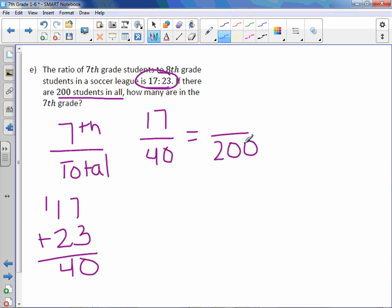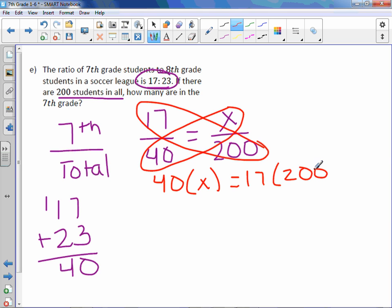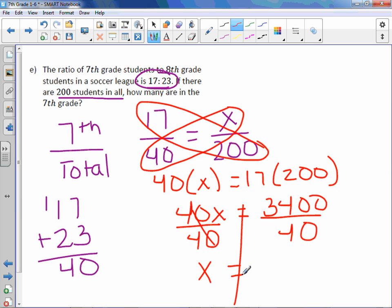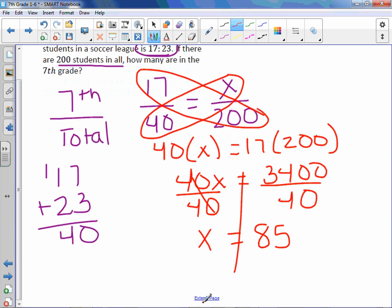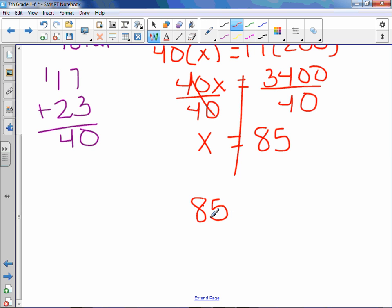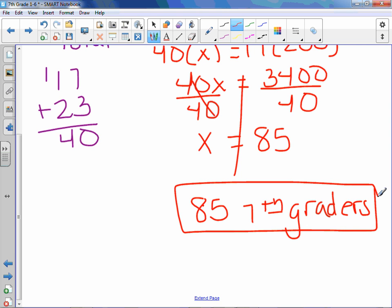We want to find how many 7th graders are in 200 students. So 200 would also be a total, which leaves our unknown up in the numerator. Cross multiply. 40 times X equals 17 times 200. 40 times X is 40X. 17 times 200 is 3,400. Divide by 40. X equals 85. So our answer is 85 7th graders or 85 students in the 7th grade. Whichever way you would like to word it or on the soccer team. So 85 students in 7th grade on the soccer team.